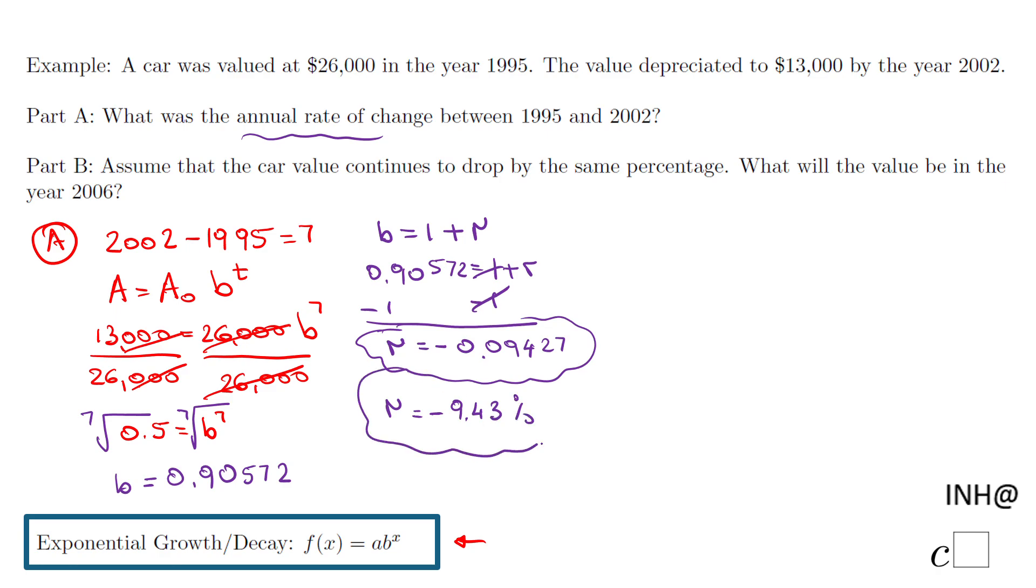Now let's go to Part B. On Part B we need to find the value of the car in 2006, assuming the value continues to drop by the same percentage. So we have first of all 2006 minus 1995, that means 11 years of depreciation. And now we're gonna plug it in the formula.